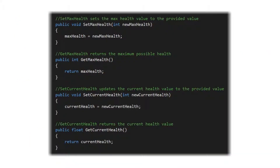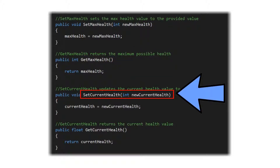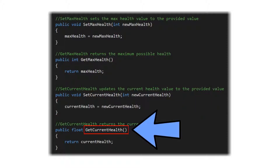To do that for our variables within our Health Manager, we're going to adjust our max health and current health by using a set max health function and a get max health function. Then for the current health, we're going to use a set current health function and a get current health function.